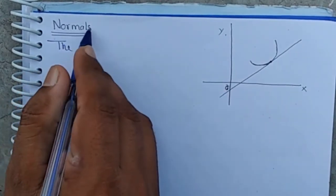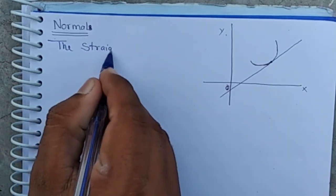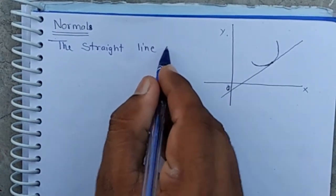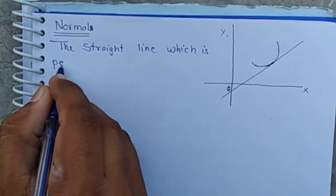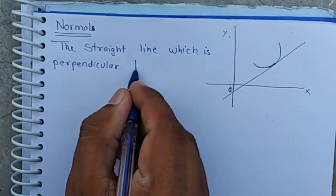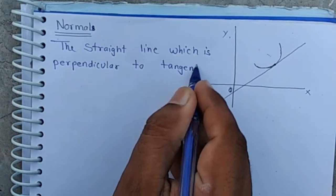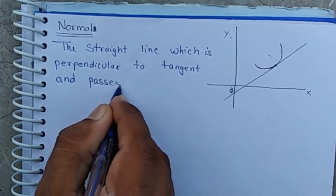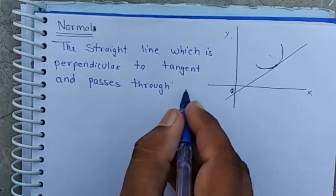The straight line which is perpendicular to tangent and passes through point of contact